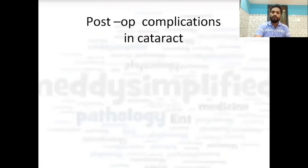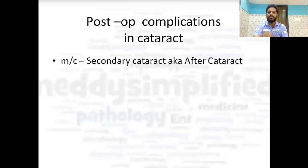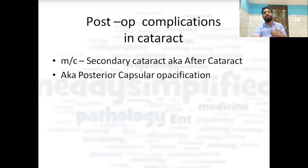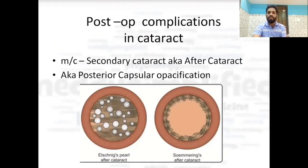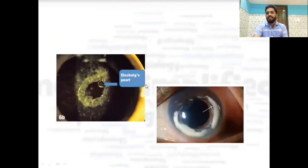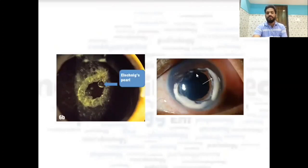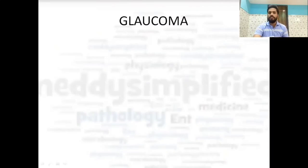The most common postoperative complication of cataract surgery is secondary cataract, also known as after-cataract or posterior capsular opacification. There are two variants: Elschnig's pearls after-cataract and Soemmerring's ring after-cataract. The actual appearance of Soemmerring's ring and Elschnig's pearls shows pearl-like deposits — these are the two important images for post-operative cataract complications.